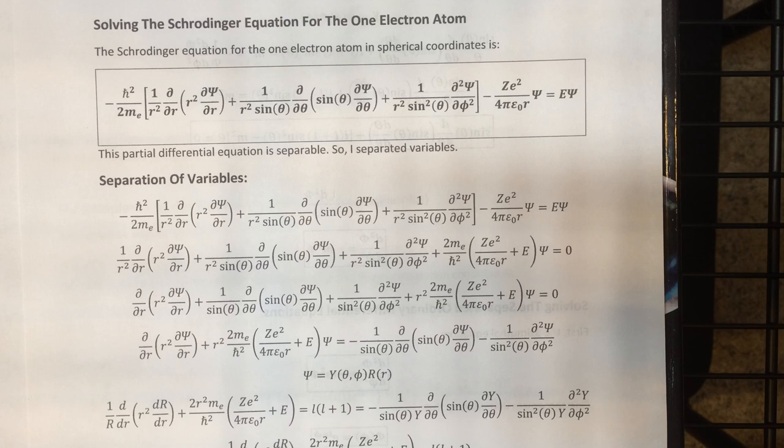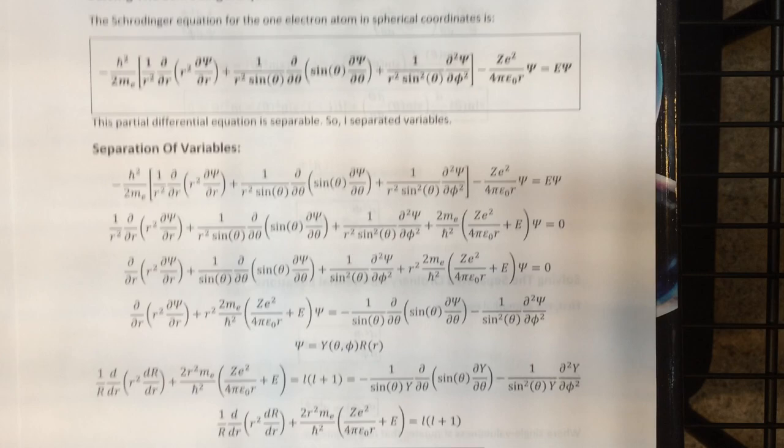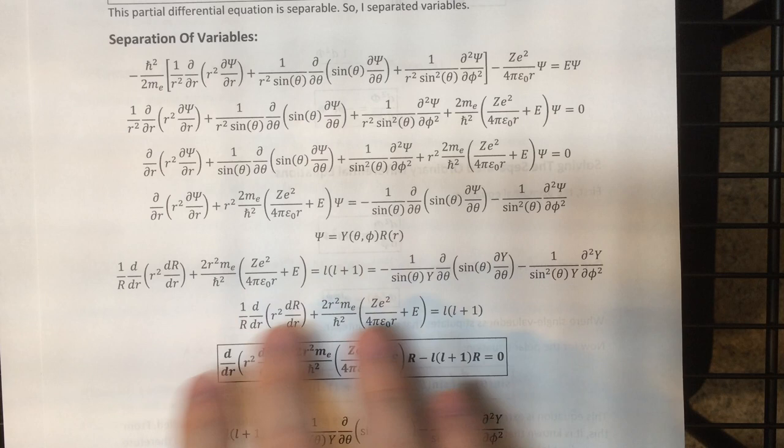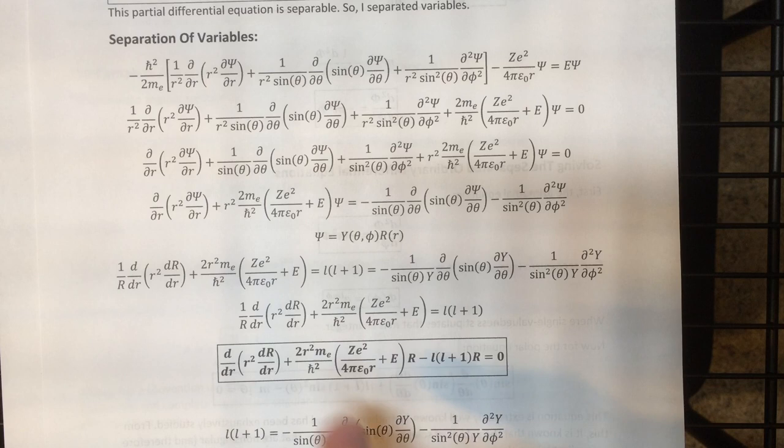So I subtracted those two terms to the other side, postulated the separation of variables ansatz that would do that for me. Since I'd set it up so nicely, all I had to do was insert it, divide by the solution, and it was automatically separated. Then I set it equal to the separation constant that was required in order to make the angular equation be solved by the standard spherical harmonics.